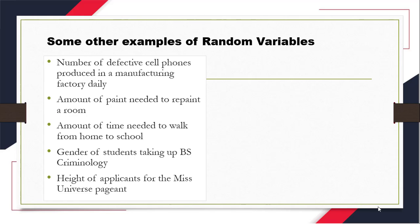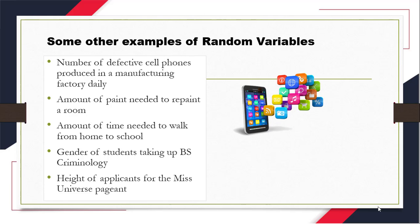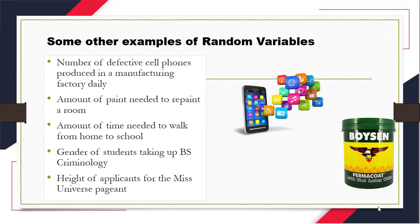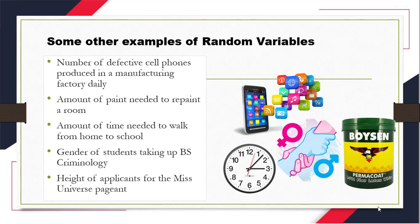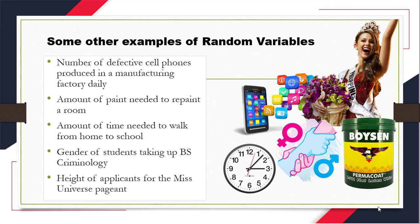On the list, we have number of defective cell phones produced in a manufacturing factory daily. Next up, we have amount of paint needed to repaint a room. We also have amount of time needed to walk from home to school, and we also have gender of students taking up BS Criminology, or it could be the height of applicants for the Miss Universe pageant.